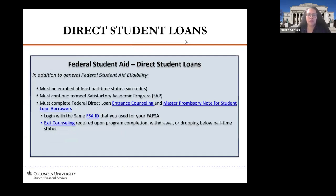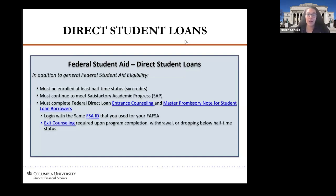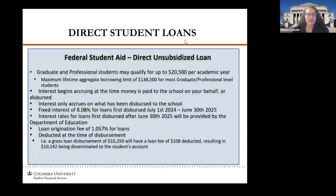For federal direct student loans for graduate students, the basic criteria matches the same criteria for federal aid — you have to be enrolled at least half-time, which is six credits or more, and meet satisfactory academic progress. There's also entrance counseling and a master promissory note, but we can go over that in more detail on Accepted Students Day or as we get closer to the start of the semester. The direct unsubsidized loan provides $20,500 for the academic year and begins accruing interest as soon as the university receives the funds. The interest rate is 8.08% and there is an origination fee taken off the top of the loan.